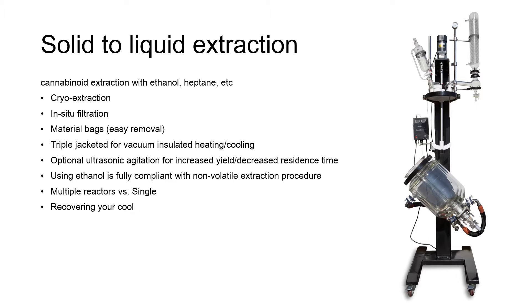One of the things that makes this system really special is that because it has a vacuum-jacketed layer and is able to separate the two pieces, you're able to do a cryo extraction fairly easily. With ethanol, cryo extraction is important because if you can reduce the temperature of your solvent enough, you can basically get to the point where you're not dissolving any waxes, or very minimally. That makes it so that you don't have to do a winterization or de-waxing process.